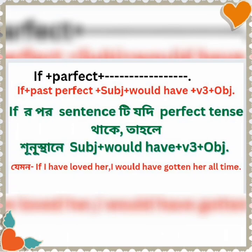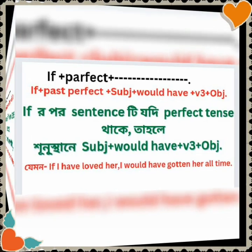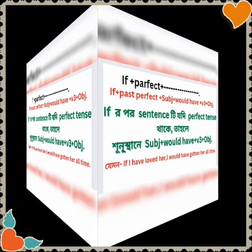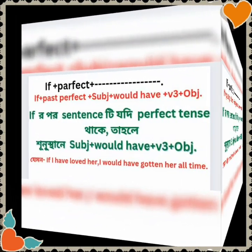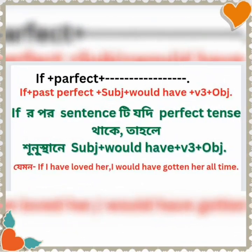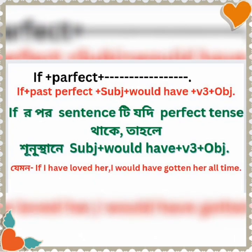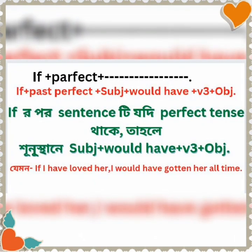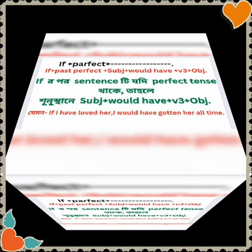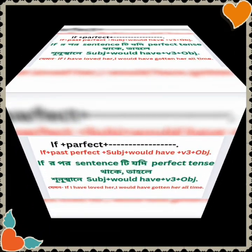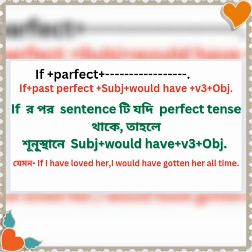Now for a perfect conditional example: 'I have loved her, I would have gotten her all the time.' So in this sentence using the perfect tense, the structure becomes 'would have' plus past participle. The subject uses 'I would have gotten her.'